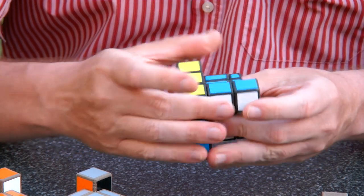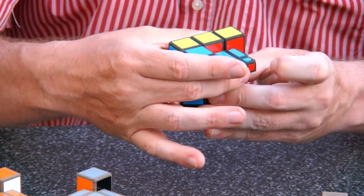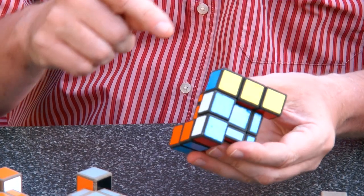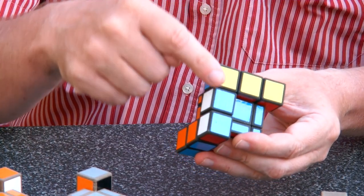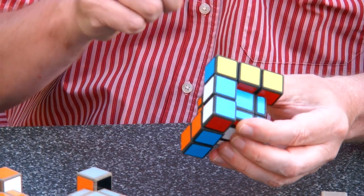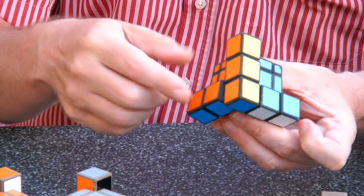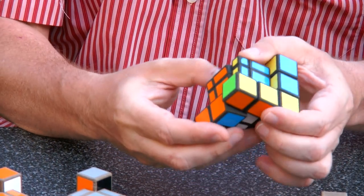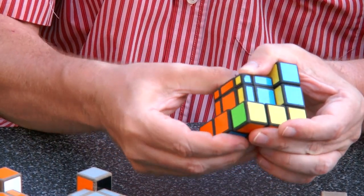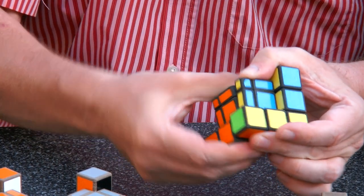And actually it has a very special reason why it blocks, because the requirement is that all the pieces, like this, so the larger cubes, should stay connected. So I can make any turn where they stay connected, but as soon as they risk getting disconnected here, then the movement blocks.